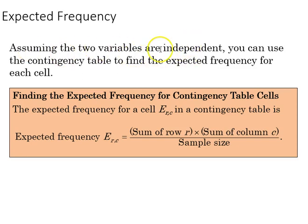Of course, we've got to assume that the two variables are independent for this test, so this is what is a test of independence. You can use the contingency table to find the expected frequency for each cell, and we do that by taking the sum of row R and the sum of column C and adjusting it by sample size, and that gives us our expected row column frequency.